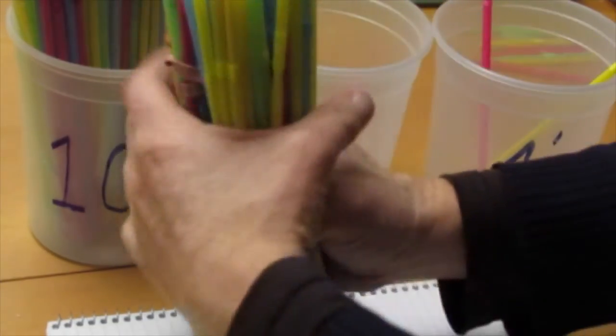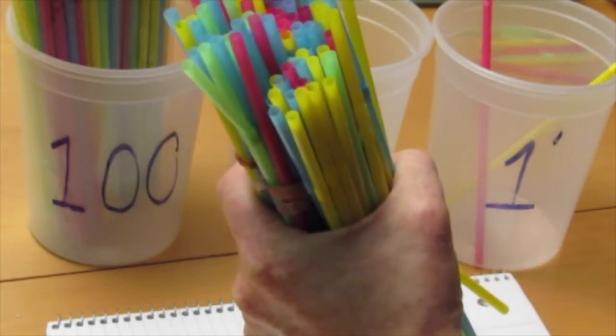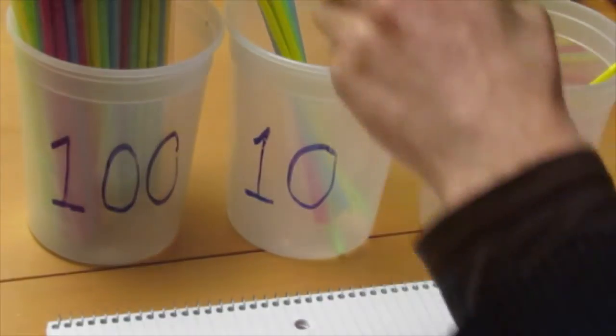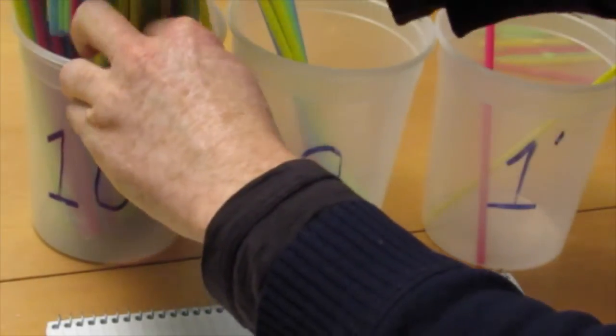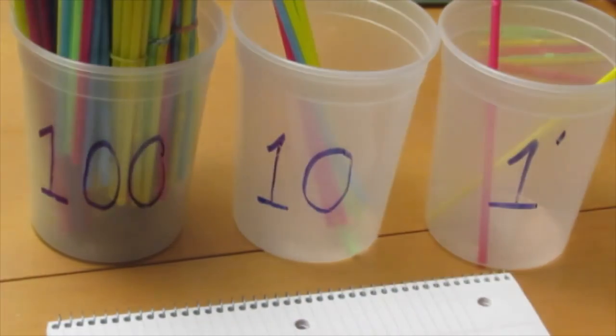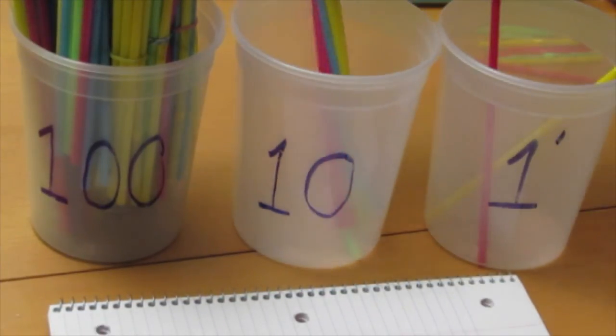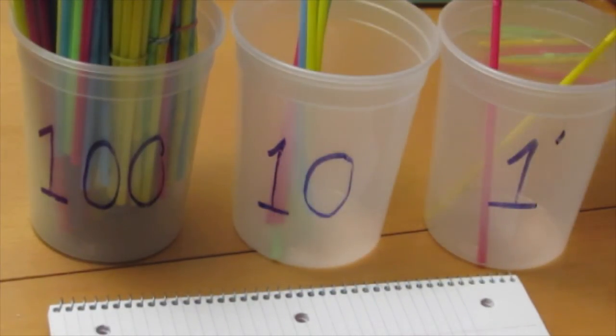So we bundle this up and into the hundreds bin it goes. So all together, we have 1, 200, plus 10, plus 2, 212.